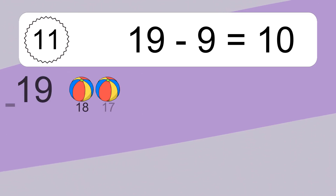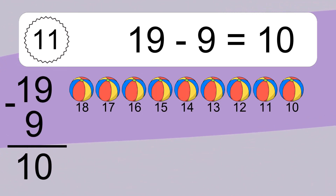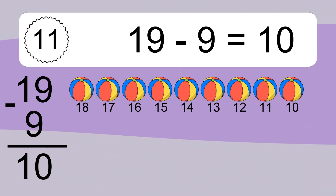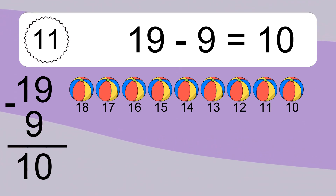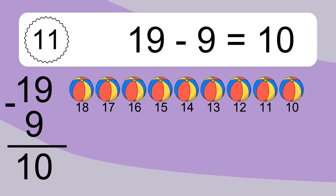19 minus 9 equals what? 19 minus 9 equals 10. Let's count it: 18, 17, 16, 15, 14, 13, 12, 11, 10.